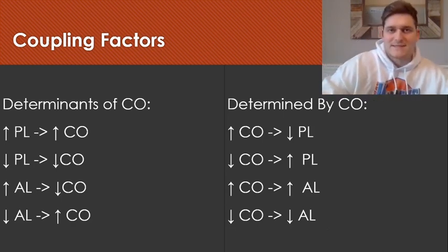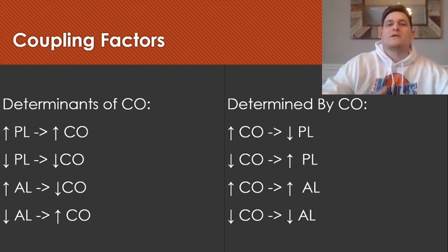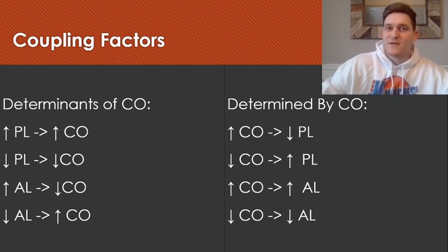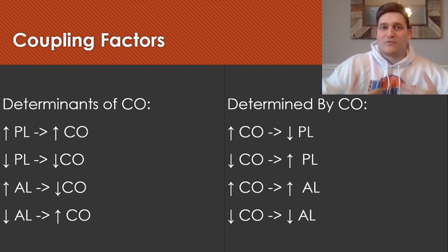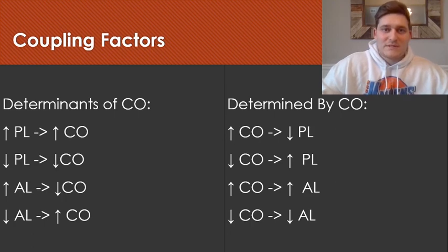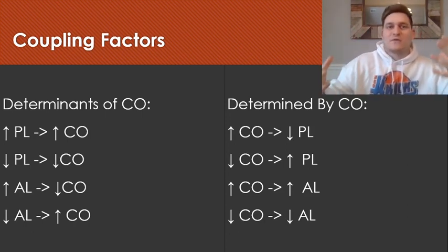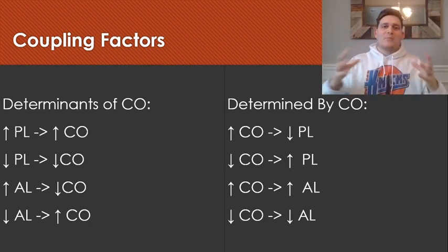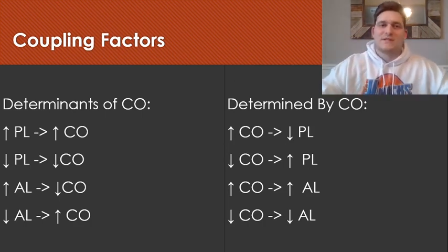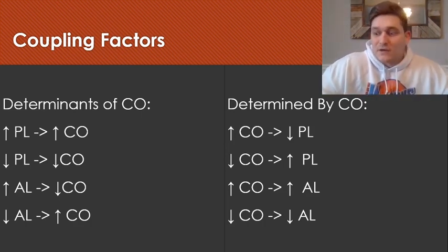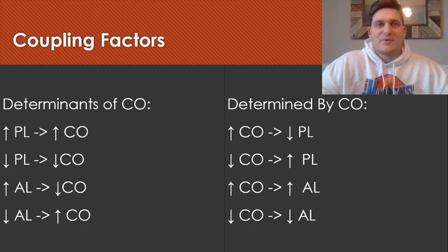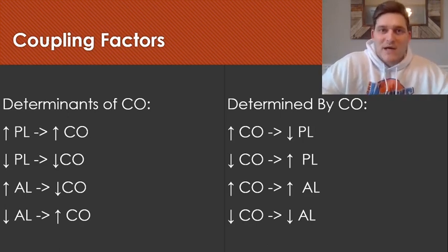That concludes part one. As the lectures go on, we're going to talk more about all the different things that impact the performance of the heart and cardiac output. We'll discuss the relationship between cardiac performance and the vasculature, and ultimately how the body adjusts to all these different changes in order to optimize cardiovascular performance and maintain blood flow around the body. Thank you, and I'll see you in the next video.